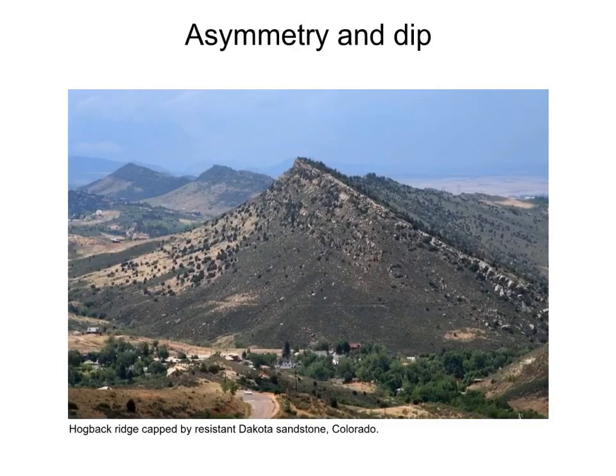Here is one example from a hogback ridge in Colorado. We can clearly see the dip slope and the scarp slope. The dip slope is a good approximation to the top of the strong unit, in this case the Dakota sandstone.